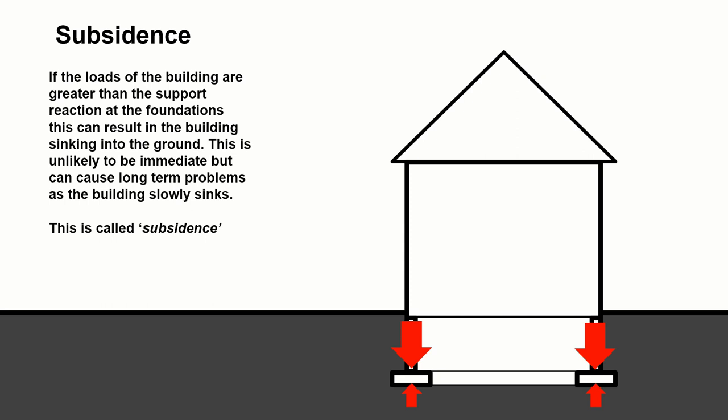Where I mentioned earlier on that the building has to be in equilibrium, there are two potential problems if the building is not in equilibrium. If the loads in the building are greater than the support reaction at the foundations, this can result in the building sinking into the ground. This could be if the bearing capacity of the ground is not substantial, if the soil or ground itself was not capable of carrying a sufficient load or the foundations weren't designed to spread the load sufficiently, the building can sink into the ground. And this normally happens quite slowly over a period of time. And where it happens slowly and consistently over a period of time, we'd refer to that as subsidence.